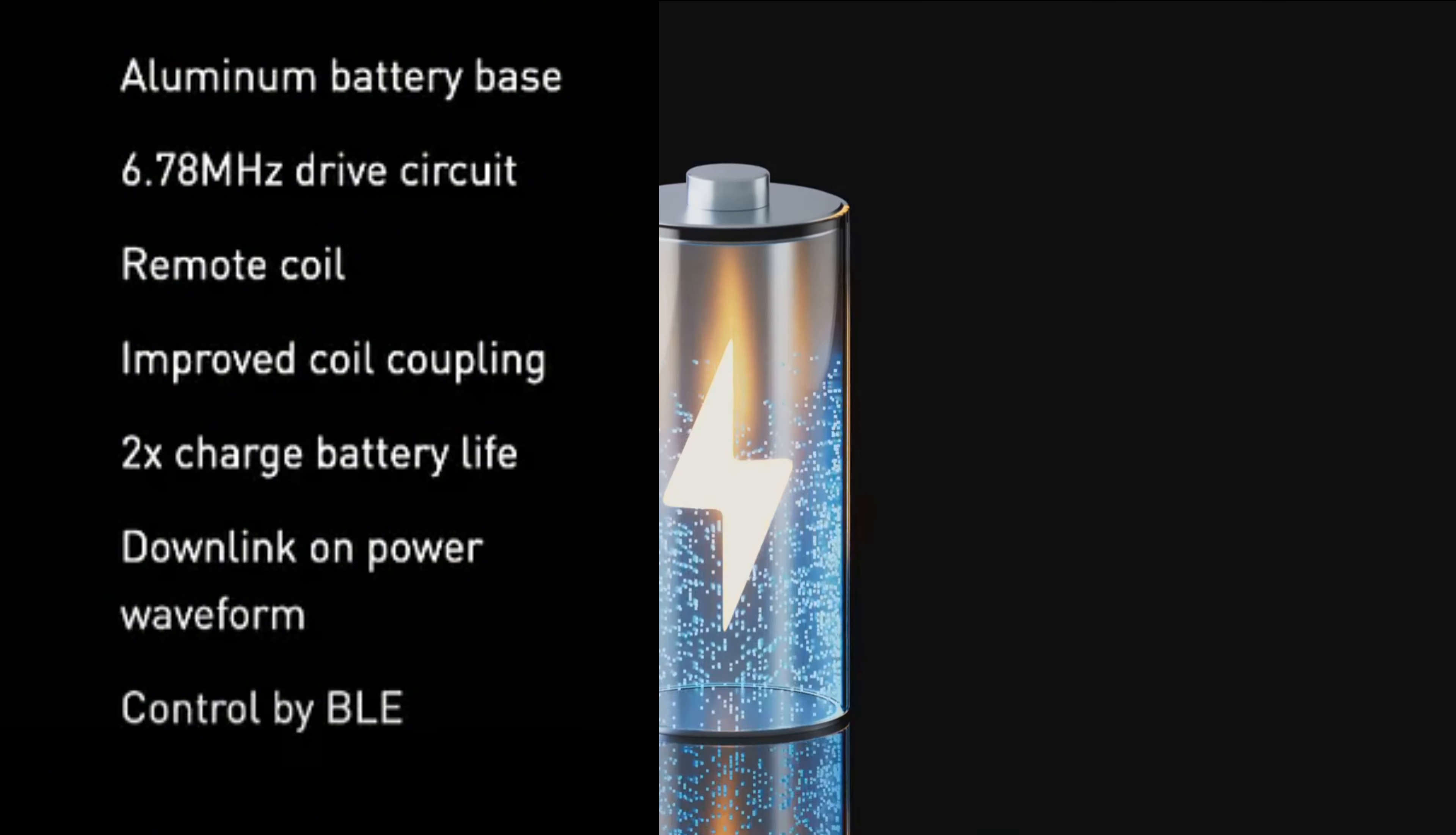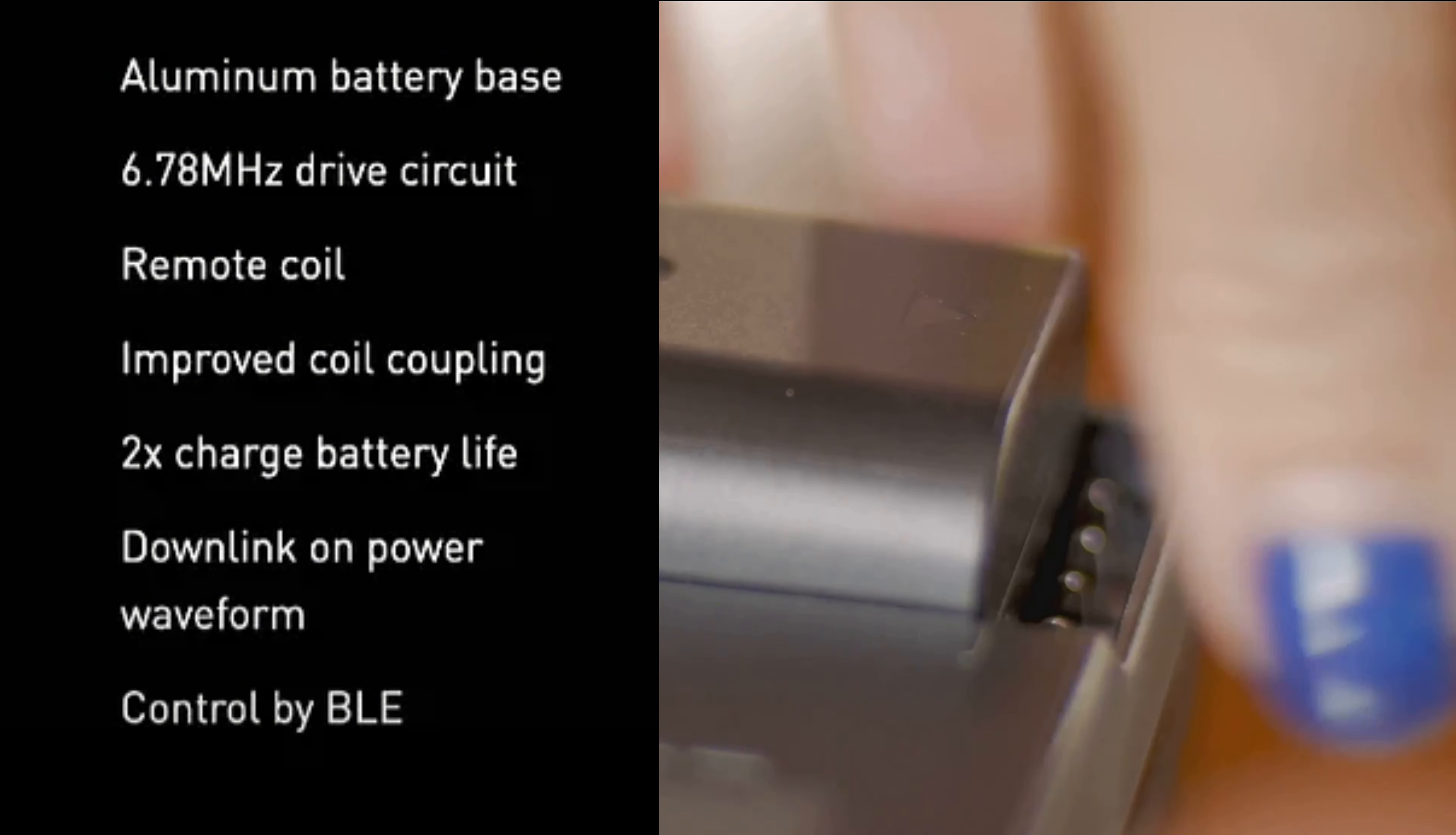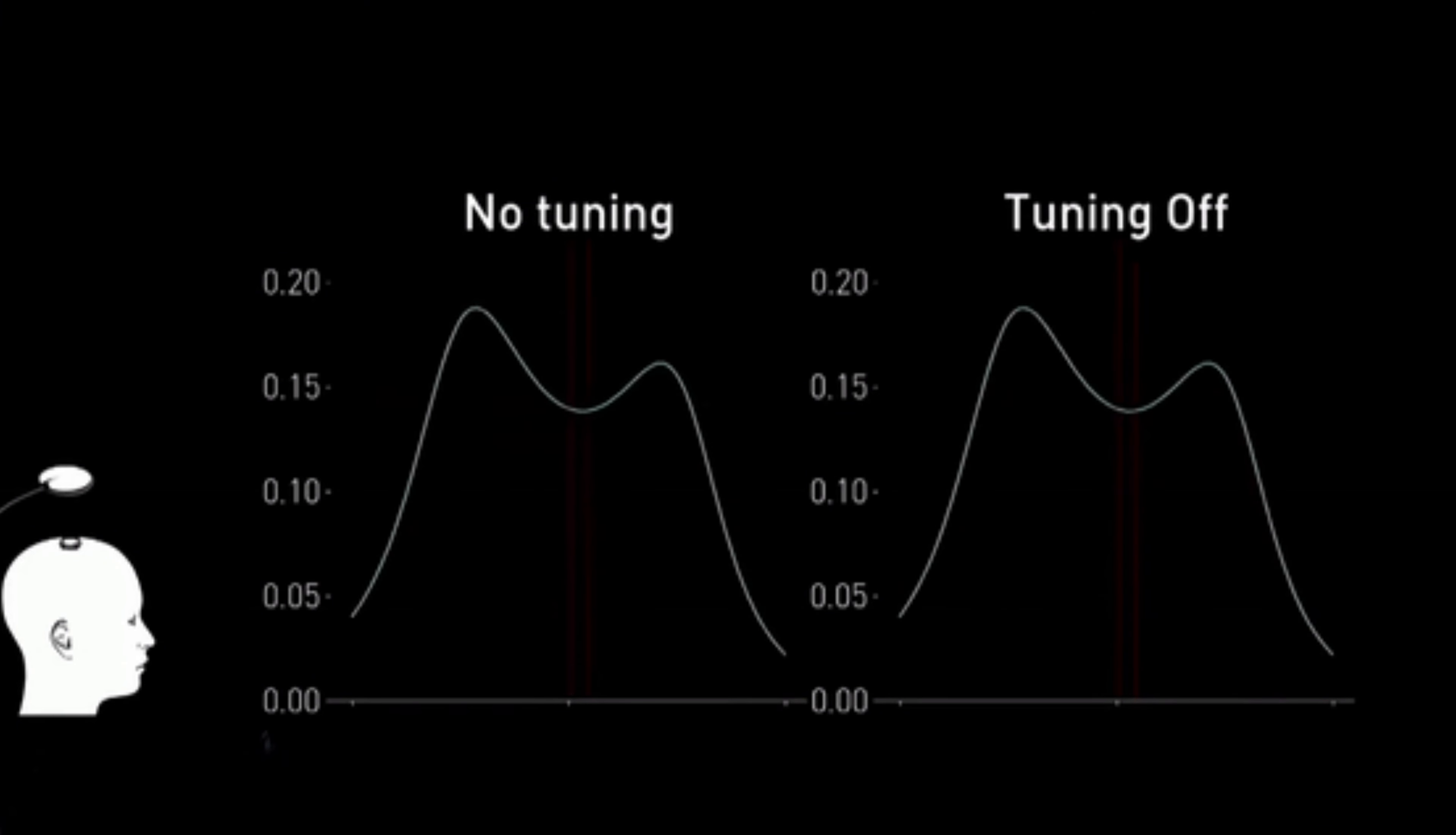However, as the coil comes closer to the implant, a peak splitting effect can occur, potentially affecting the efficiency of power transfer. To counteract this, Neuralink's team has developed a dynamic tuning system for their next-generation charger. This system adjusts the resonant frequencies of the transmit and receive coils in real-time, maintaining optimal efficiency by adapting to changes before performance degrades.